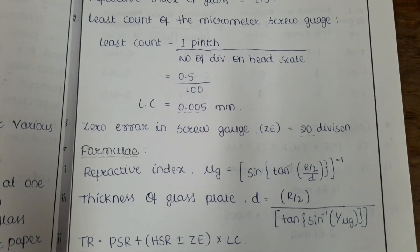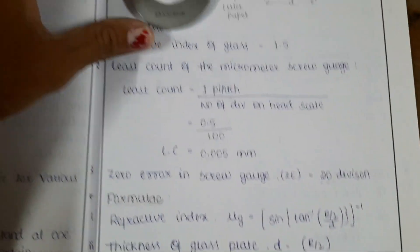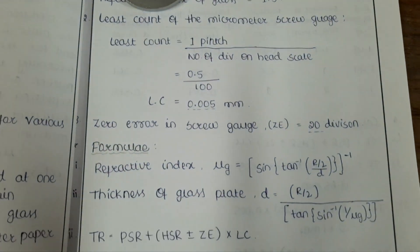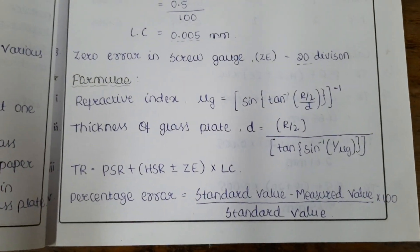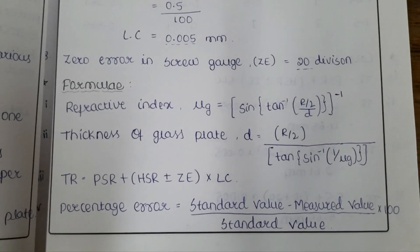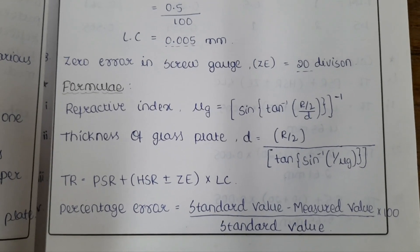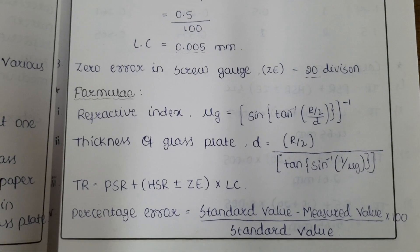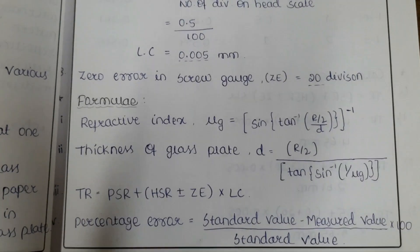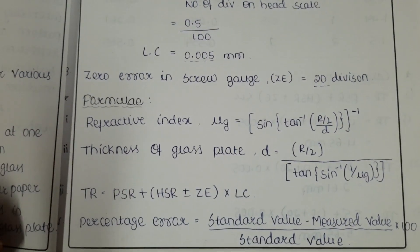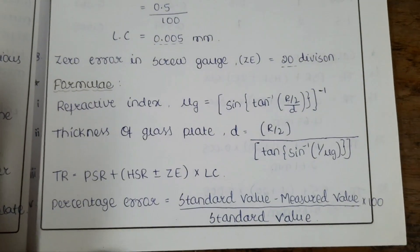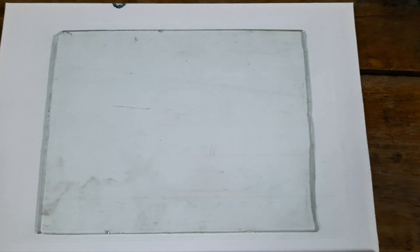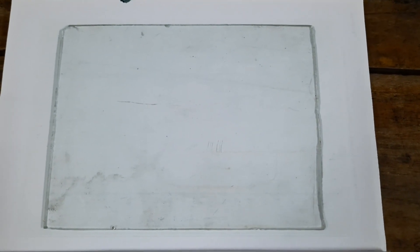Next, find the zeroth error using the screw gauge and write it down. The formulas to calculate refractive index and thickness should also be noted. The total reading — that is, the thickness measurement — is obtained using the screw gauge, and you have to calculate the percentage error at the end.